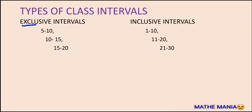In exclusive intervals, the upper limit of any interval becomes the lower limit of the next interval — so 15 becomes the lower limit of the next interval. Whereas in inclusive intervals, the lower limit of the next interval is not equal to the upper limit of the previous interval but is greater than that — 21 is greater than 20.